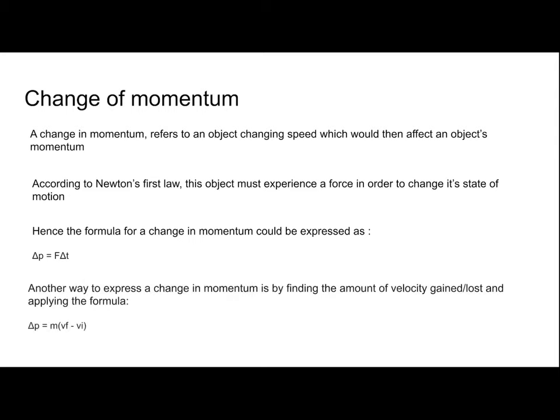Another way to express change of momentum is by finding the velocity gained or lost using the formula Δp = m(vf − vi). This is saying that if a ball was moving at an initial velocity and after a force was applied it was moving at a final velocity, the change of momentum equals the final velocity minus the initial velocity times the mass of that ball, which is constant.